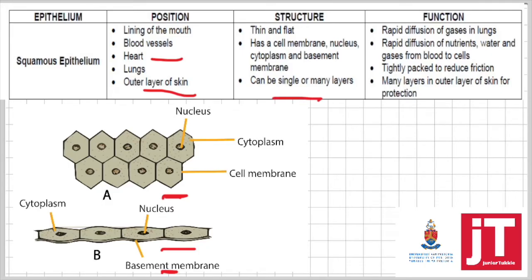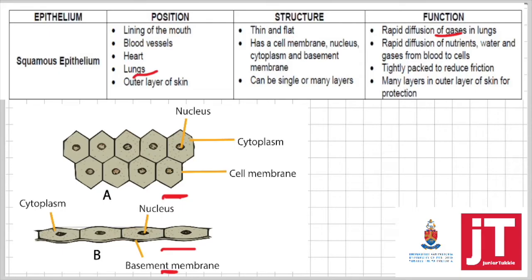This tissue is thin and flat, and that's why it's found in your blood vessels and lungs — to allow for faster diffusion. In your blood vessels, gases must diffuse out faster, and if the tissue is thin and flat, diffusion can take place faster. In the alveolus, which is the main gas exchange surface area, gases need to diffuse quickly, so it must have a single layer of thin, flat cells — squamous epithelium.